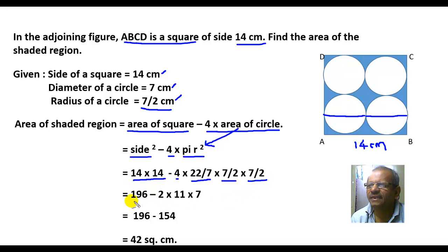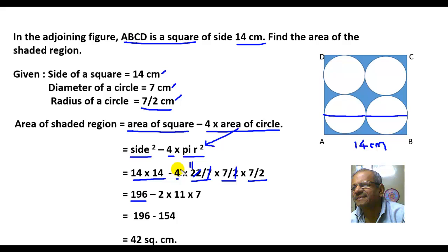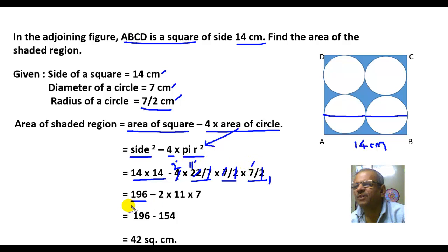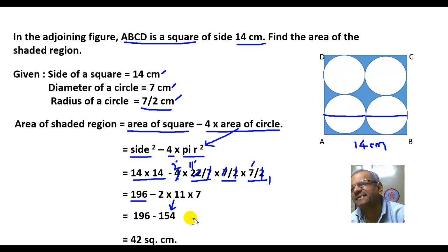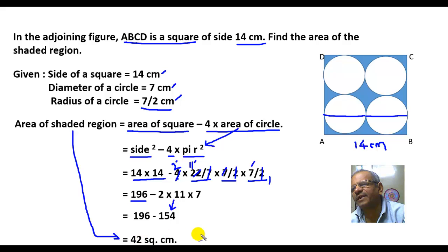14 multiplied by 14 is 196. After cancellation, the 7s cancel and you get 196 minus 2 multiplied by 11 multiplied by 7, which equals 196 minus 154, giving 42 square centimeters. Therefore the area of the shaded region is 42 square centimeters.